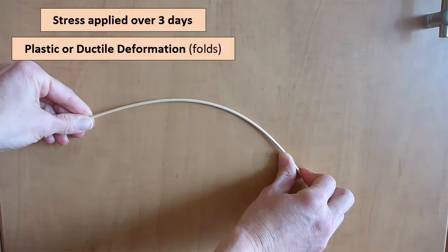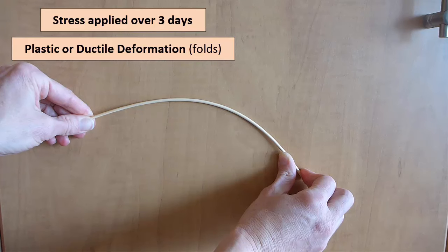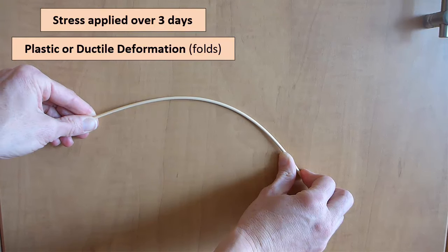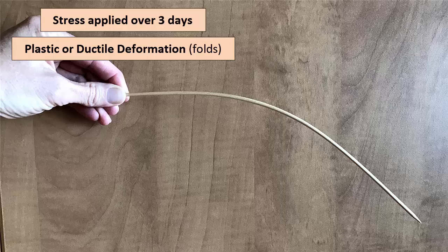Apply some pressure, deform the skewer, release the pressure, and it's permanently bent. That's plastic deformation.